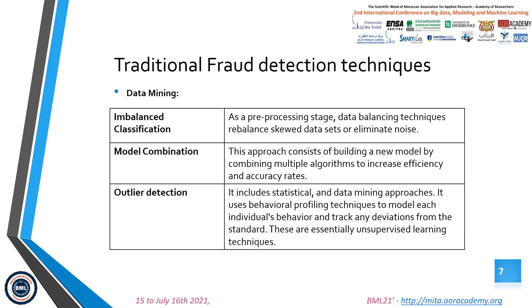Let's now turn to the data mining techniques. We have imbalanced classification, which is a preprocessing stage of data balancing techniques to rebalance skewed data sets or eliminate noise. For model combination, these approaches consist of building a new model by combining multiple algorithms to increase efficiency and accuracy. Outlier detection includes statistical and data mining approaches.